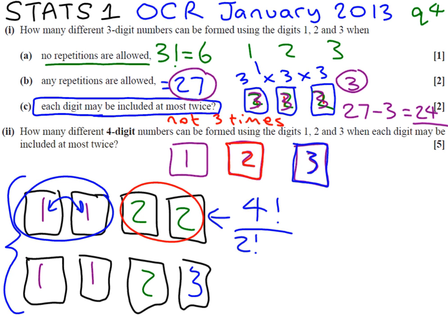And the twos are repeated in this case. So we have to divide also by two factorial to account for those being swapped and it not mattering. Now that is just a specific example. Obviously, we could have started with twos here or we could have started with threes here.